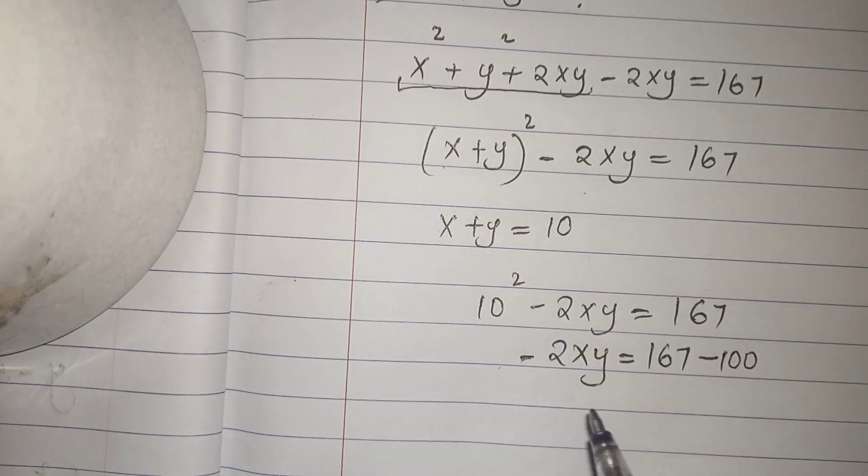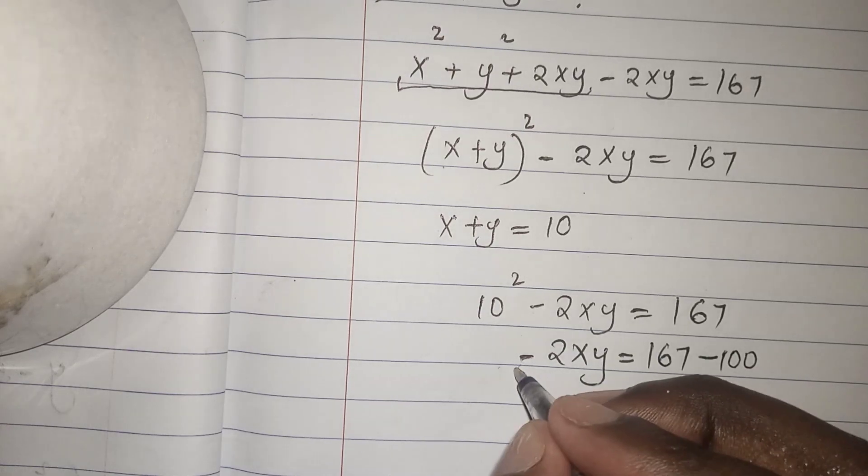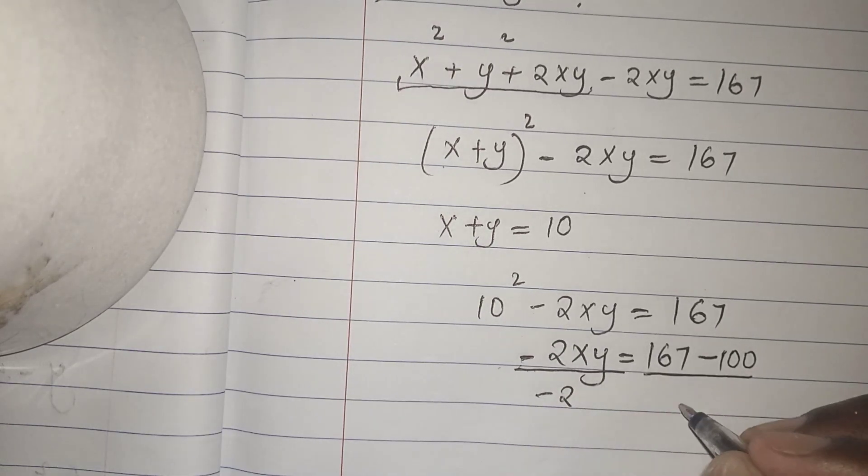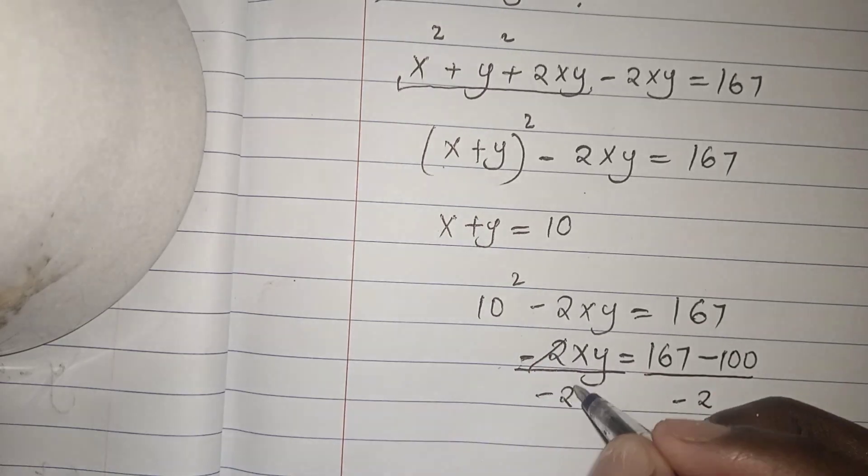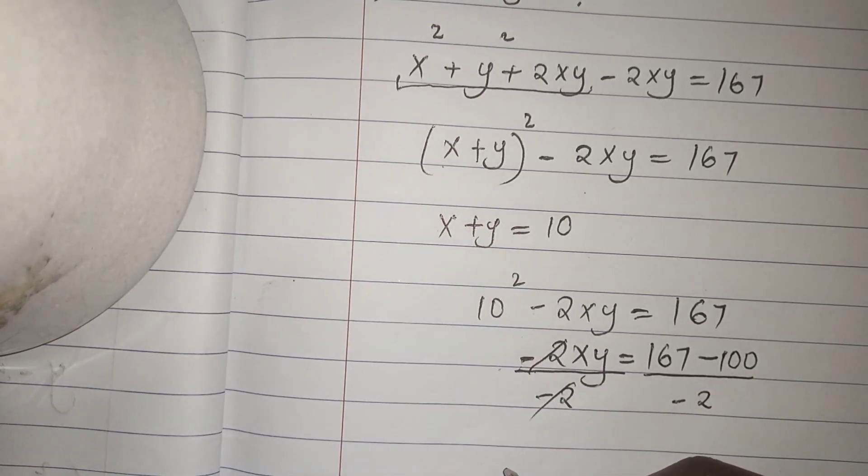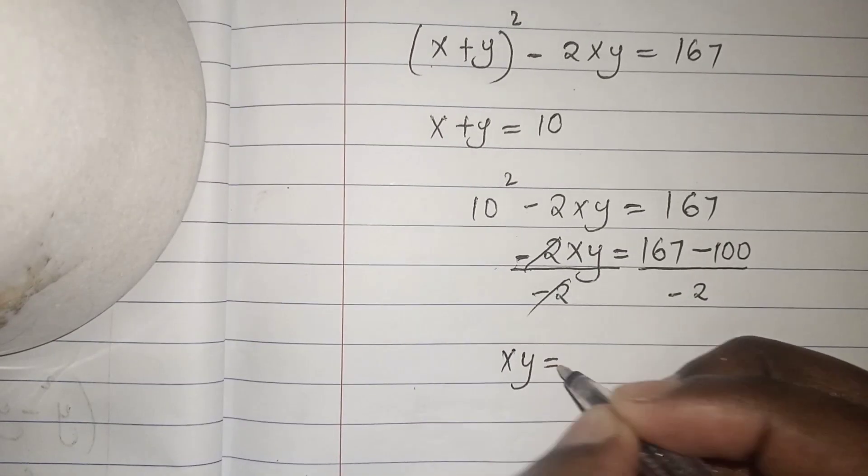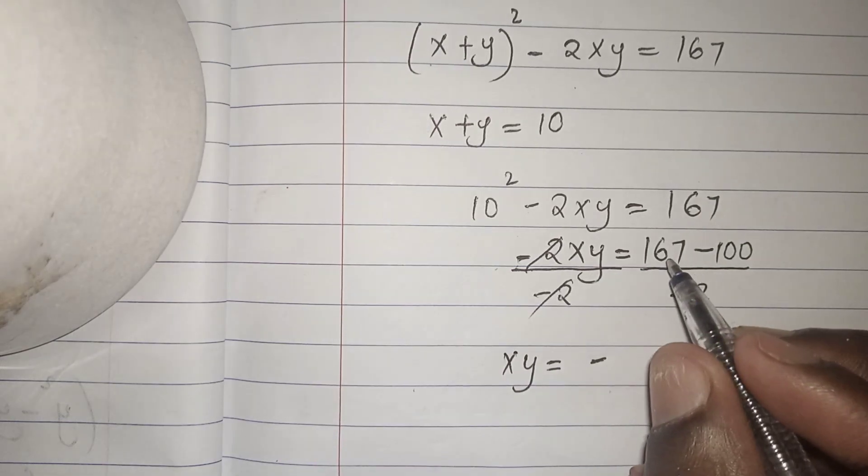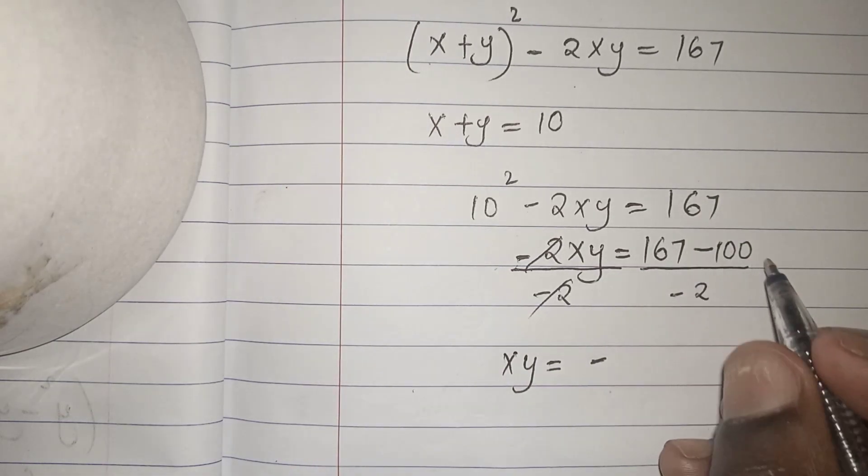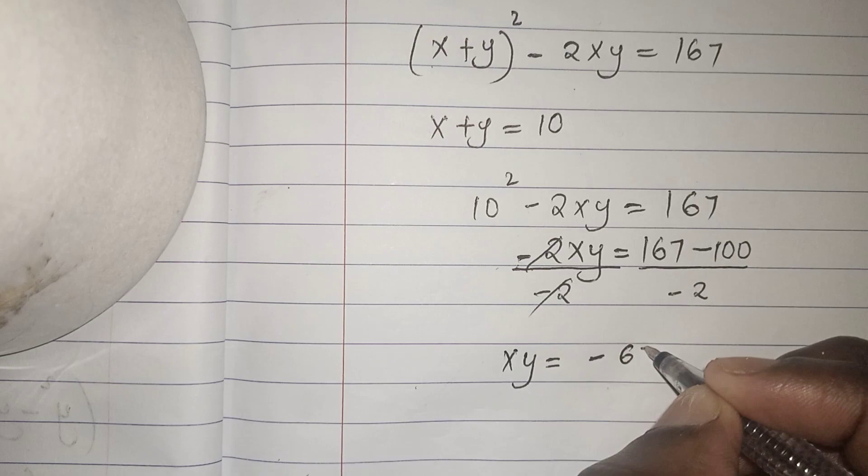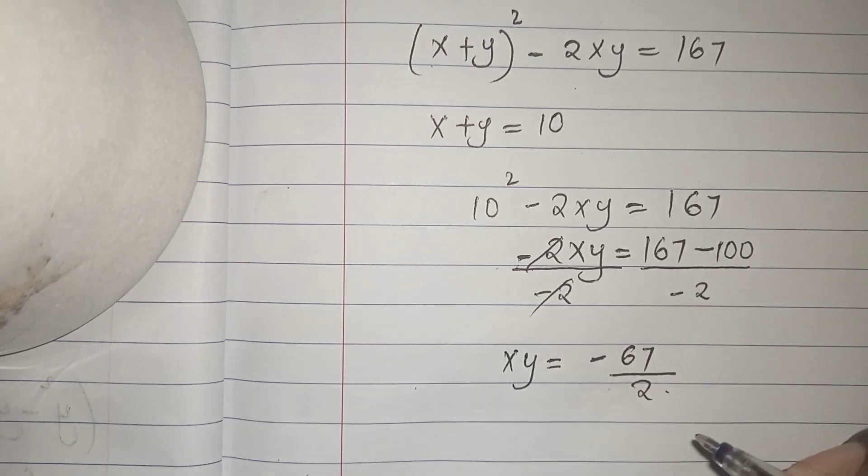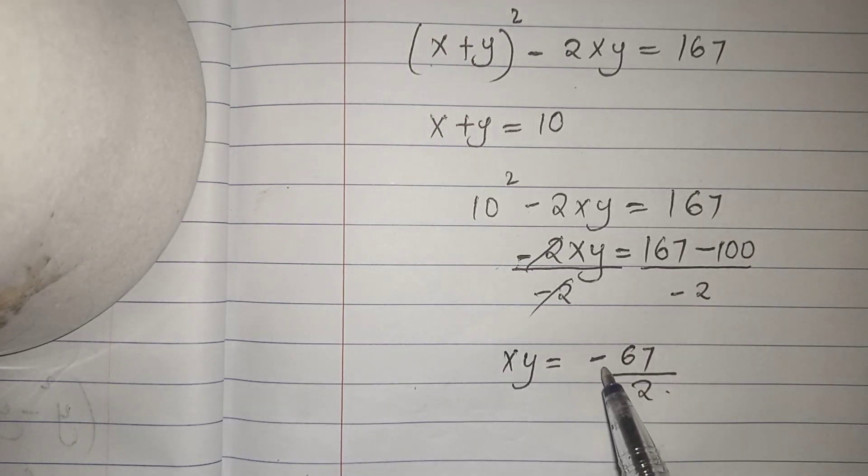So to make xy our subject, we shall divide both sides by negative 2. This and this will cancel. So xy equals negative 167 minus 100, which gives us 67 over 2. So xy equals negative 67 over 2.